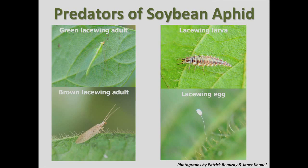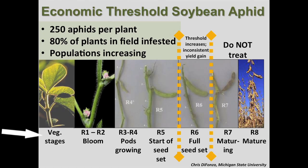For sampling, begin when the crop is in the late vegetative stage. Typically in North Dakota, that's mid to late June. Then continue sampling all the way through R5, which is the early seed set.